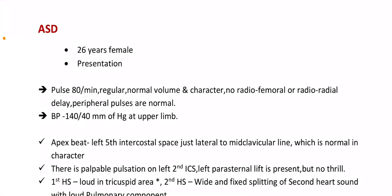ASD short case presentation: 26-year-old female. Pulse 80 beats per minute, regular, normal volume and character. No radio-radial or radio-femoral delay. Peripheral pulses are normal. Blood pressure 140/40 mmHg. Apex in the left 5th intercostal space just lateral to the mid-clavicular line, which is normal in character. There is a palpable pulsation in the left 2nd intercostal space. Left parasternal lift is present but not thrill.